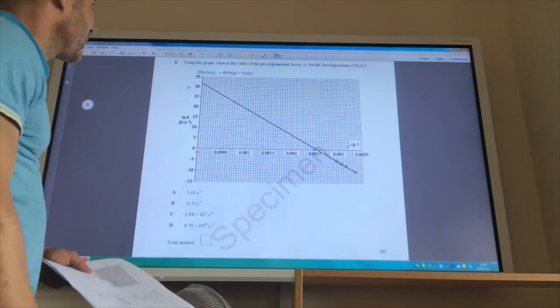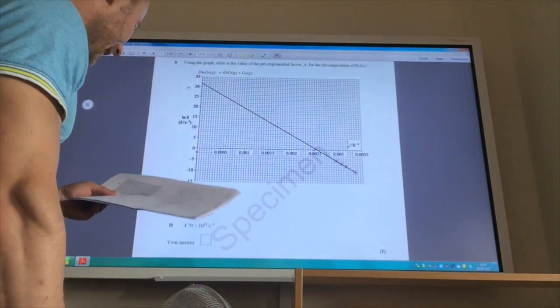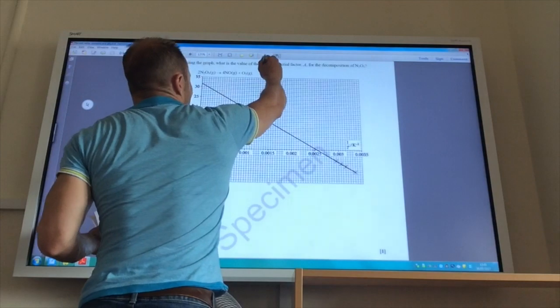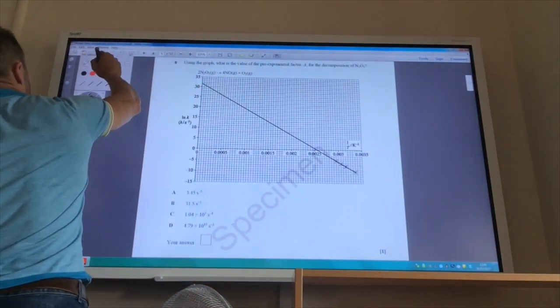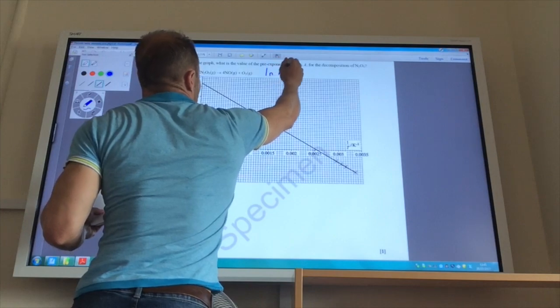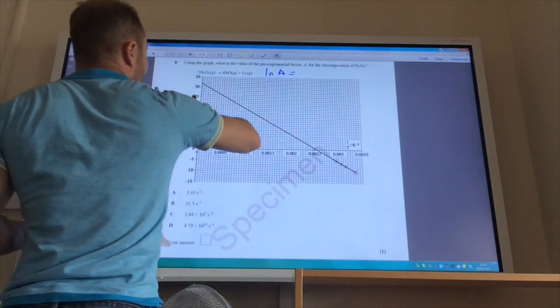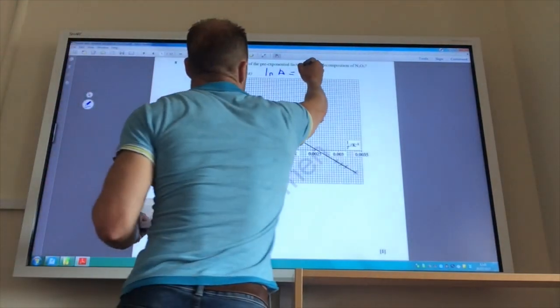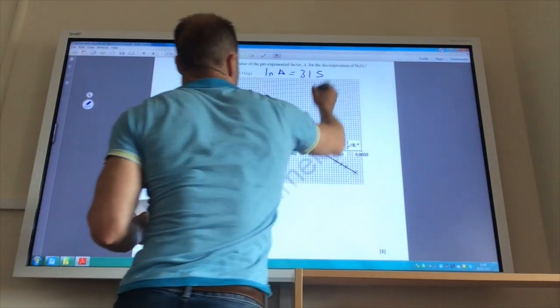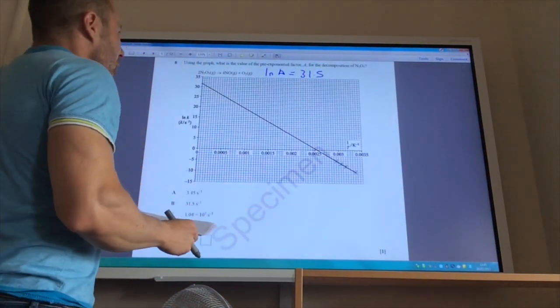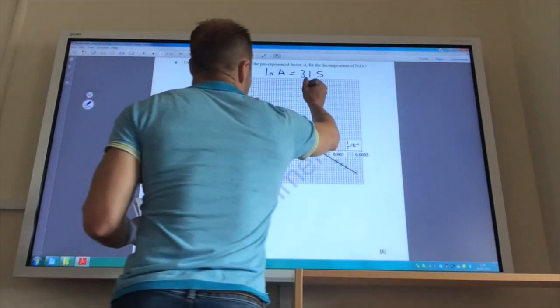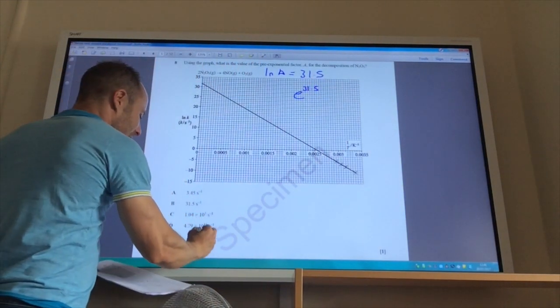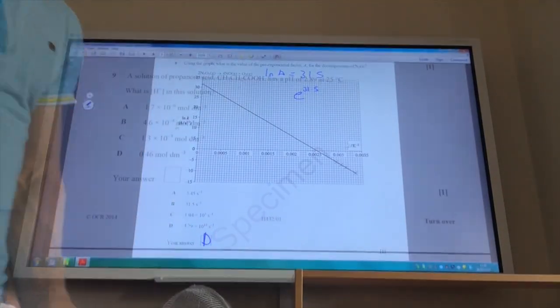For this question it wants me to find the pre-exponential factor A. Now, when using one of these graphs, the natural log of A is equal to the y-intercept there. And if you look there, the y-intercept is 31.5. So in order to find log A, it's going to be E to the power of 31.5. And if you do that, you'll get the answer D.